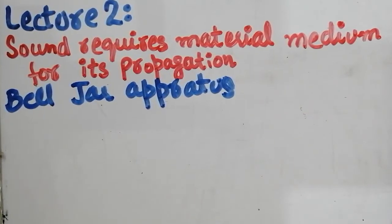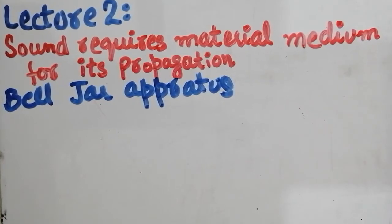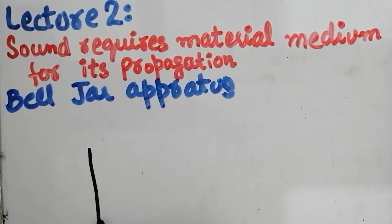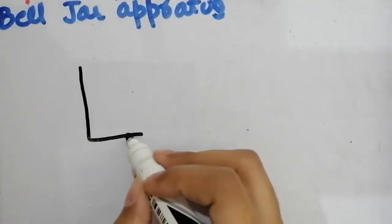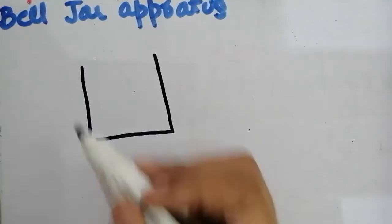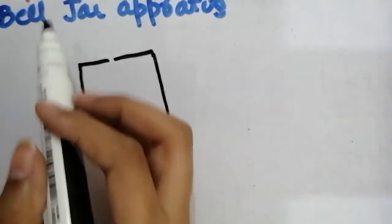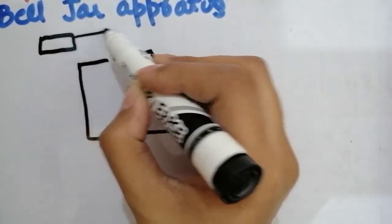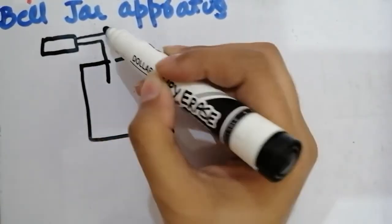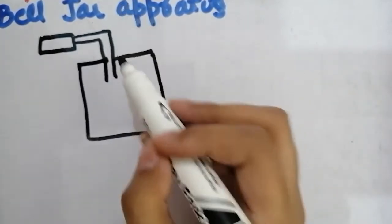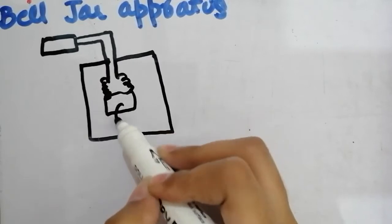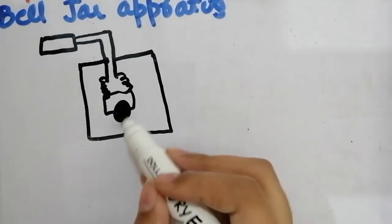First of all, there is a jar. There is a power supply connected to the jar with two wires. Inside the jar, an electric bell has been attached to the wires. This is the bell jar apparatus.